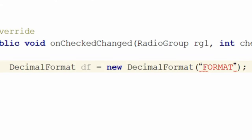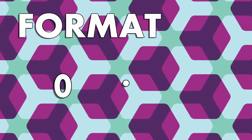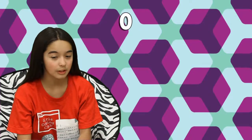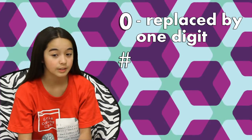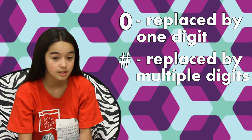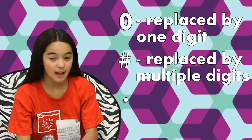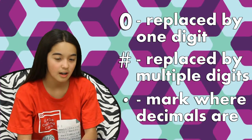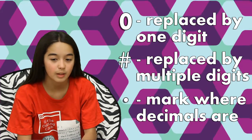You can make one by typing this. The format is a special string made up of zeros, decimal points, and hash symbols. Zeros in the string will each be replaced by one digit. Hash symbols can be replaced by multiple digits. Decimal points do what you would expect — they mark where the decimal places are. This format string should only have one decimal point.